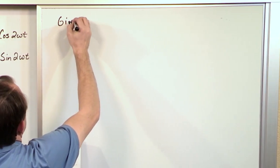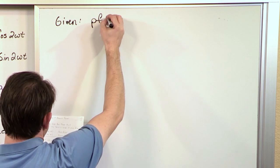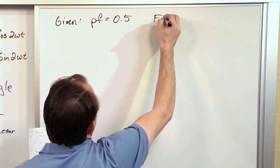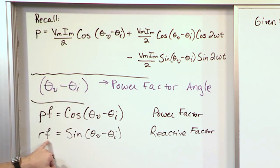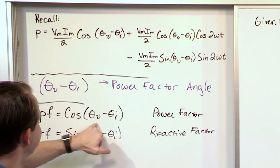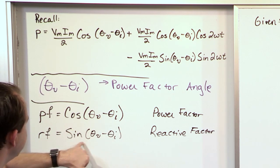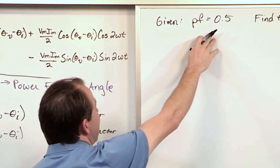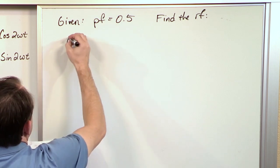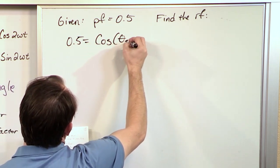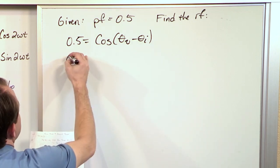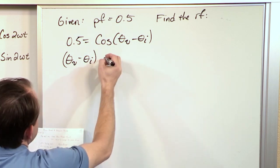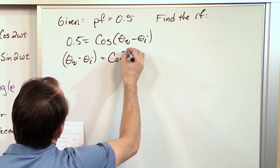For example: given that the power factor equals 0.5, find the reactive factor. You know the power factor is the cosine of this angle and the reactive factor is the sine of the same angle. So, the power factor is 0.5, which means 0.5 equals cosine of theta V minus theta I. Now I'm going to figure out what this angle is: theta V minus theta I equals the inverse cosine of 0.5.